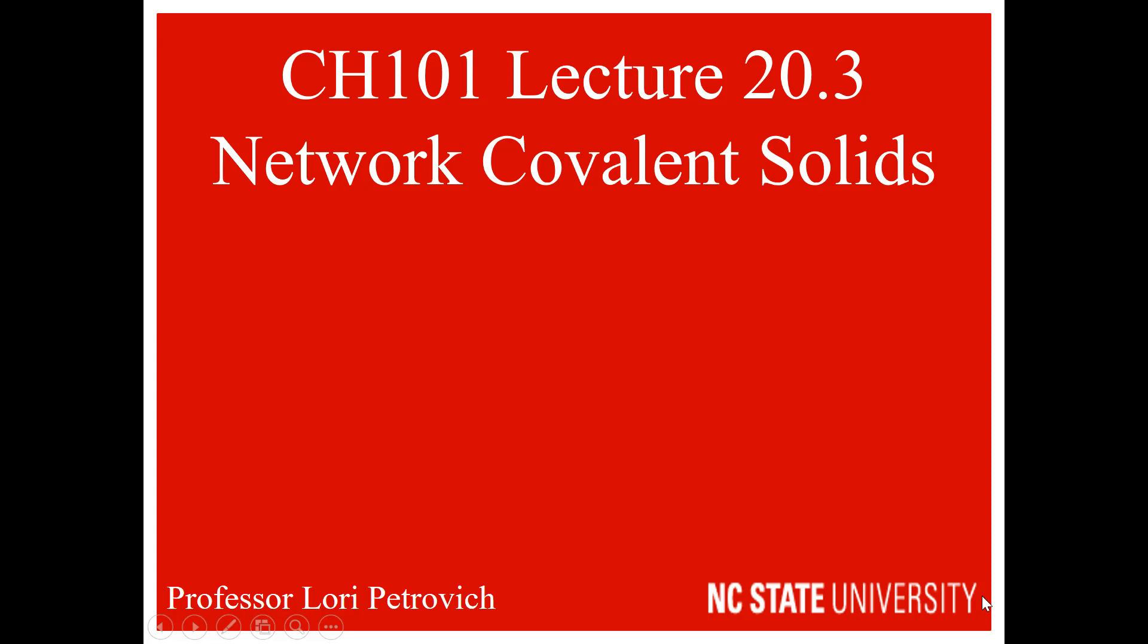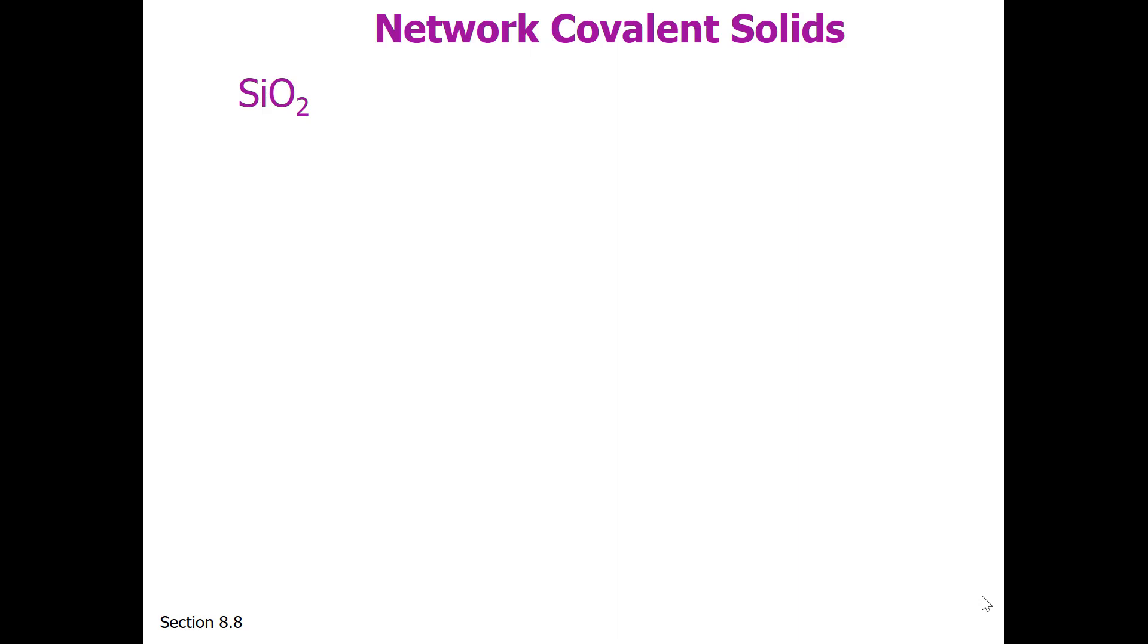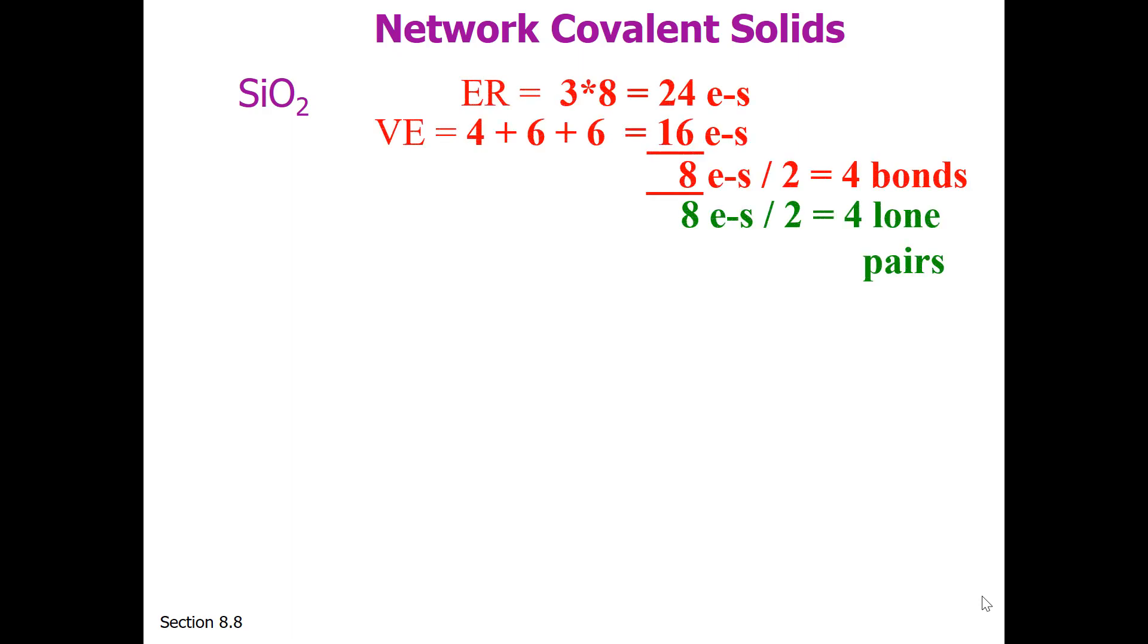The next type of solid is called network covalent solids. Back in Chapter 5, when students were asked to draw Lewis structures, if you were given the formula SiO2, students might come up with four bonds and draw the structure like this, with silicon in the middle and double bonds to each oxygen.